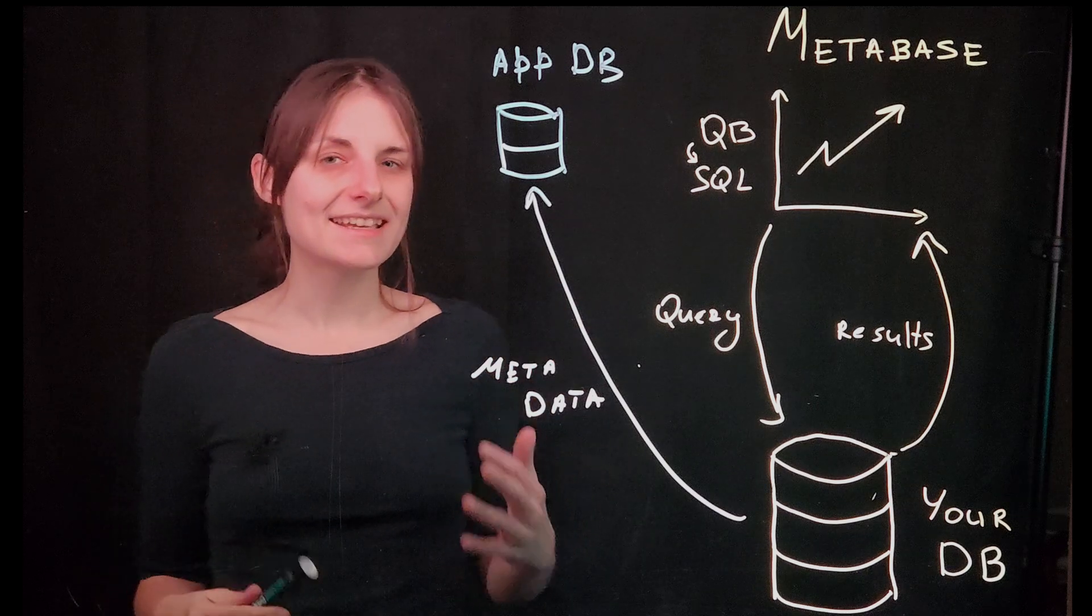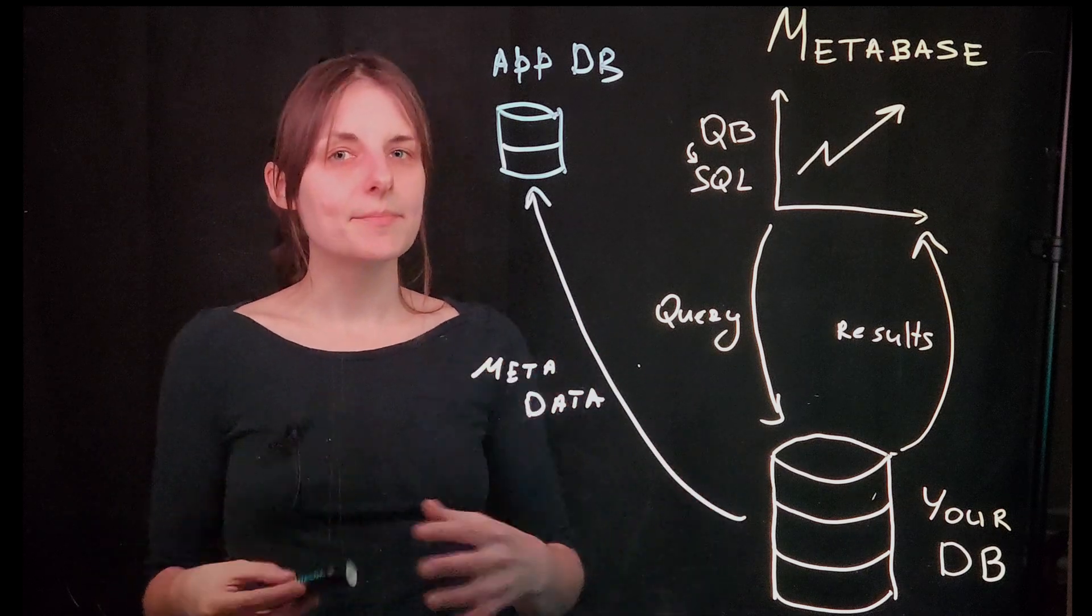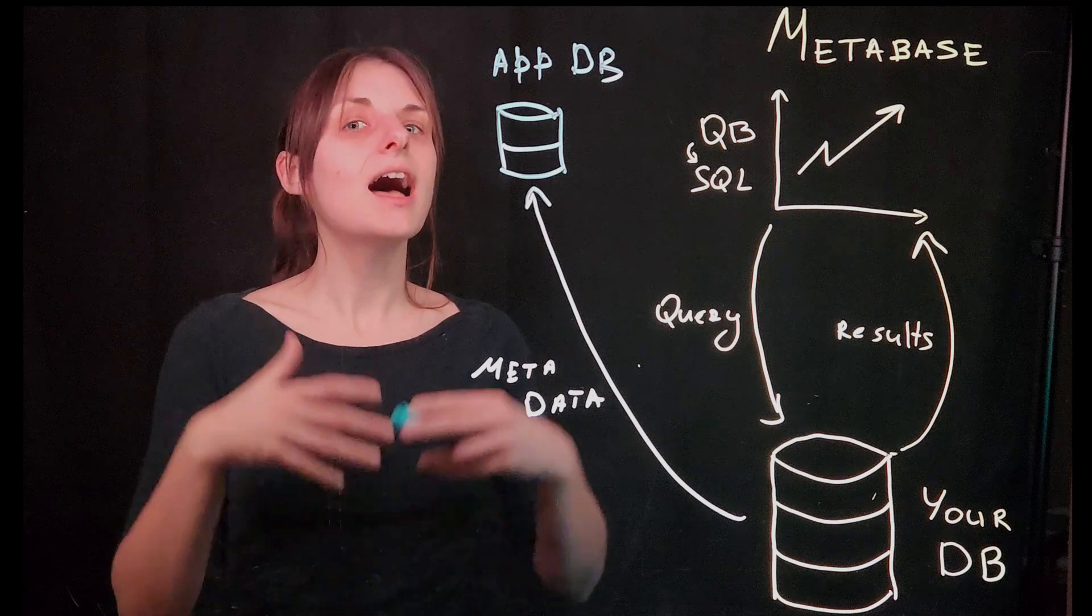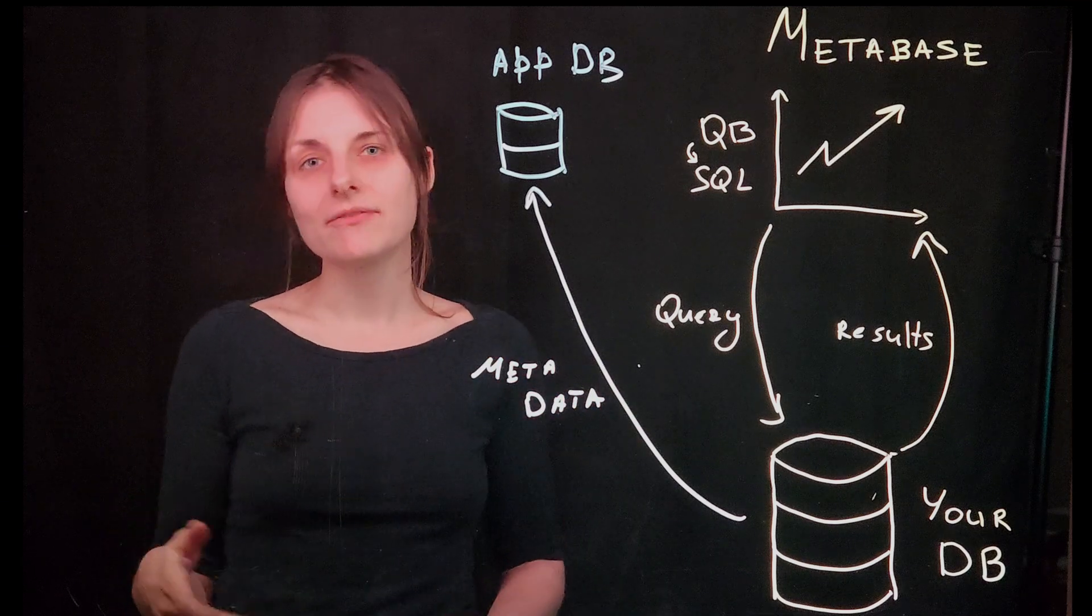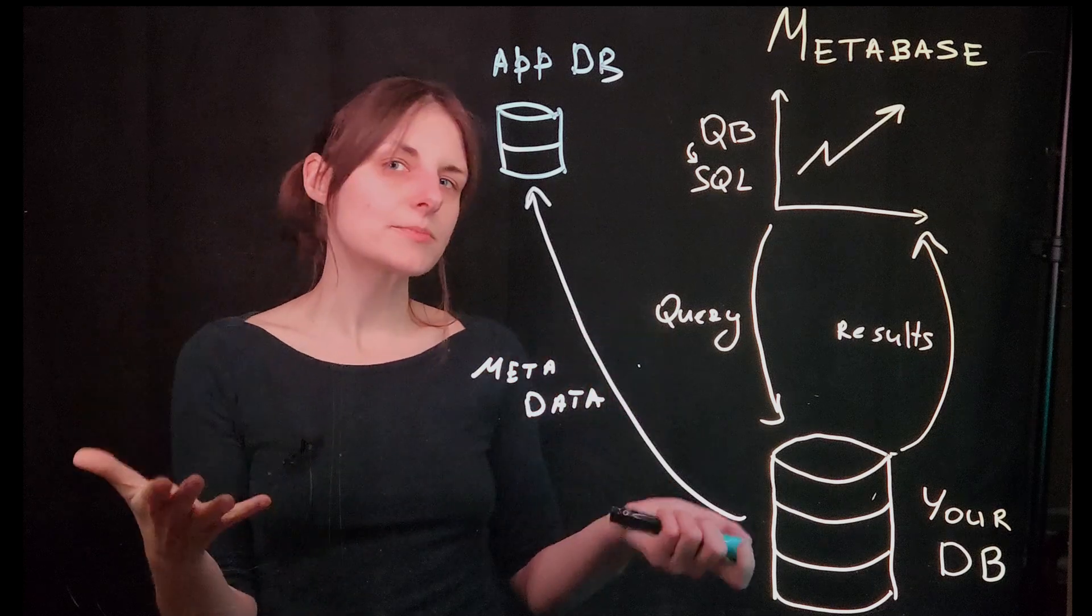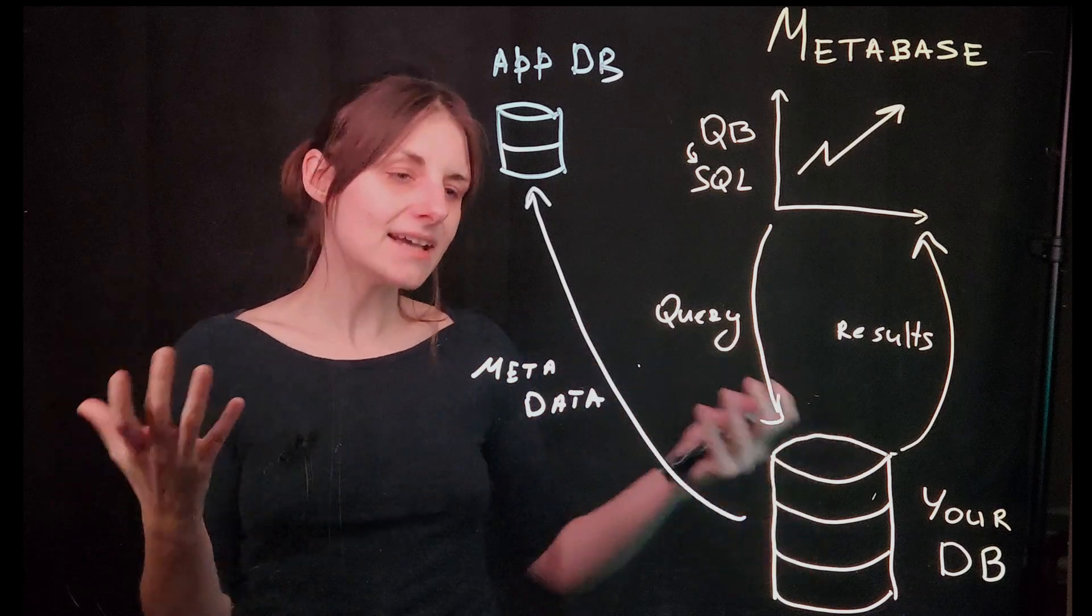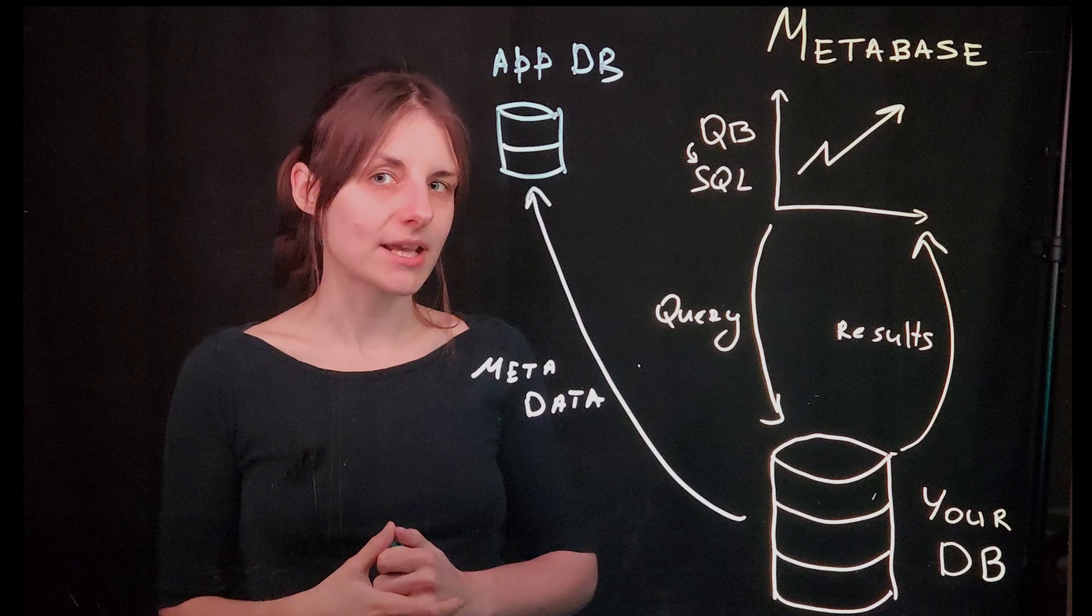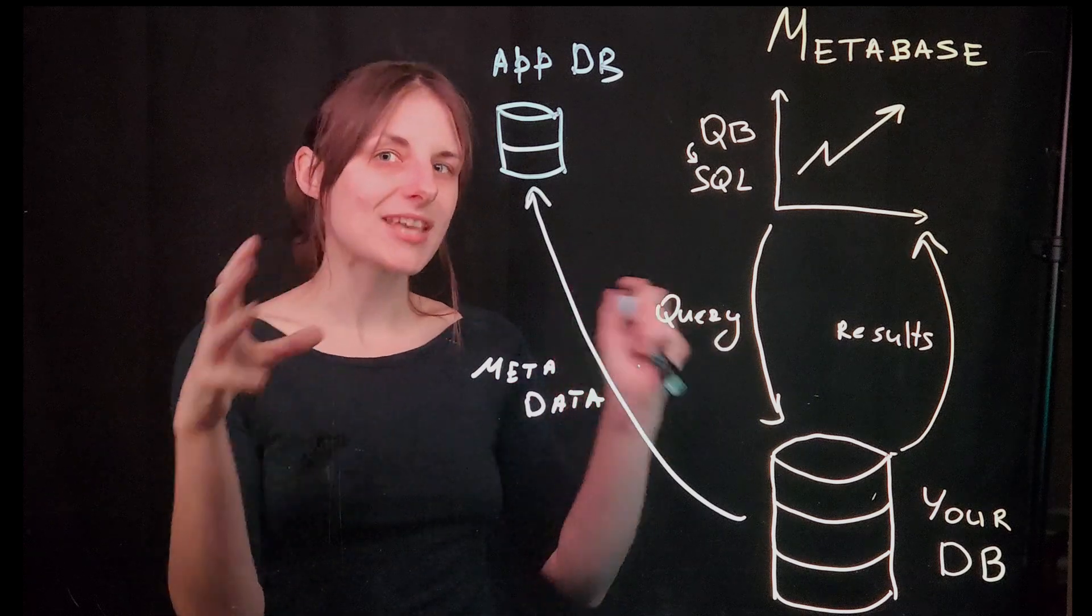Application Database is a separate database that Metabase uses to store data about Metabase. So stuff like users, settings, queries that you write, dashboards that you build, logs, and metadata about your database. So those column types and field values.